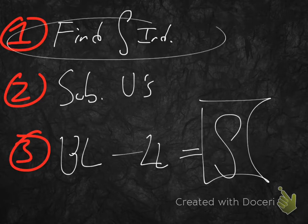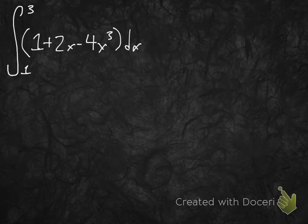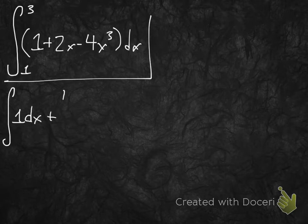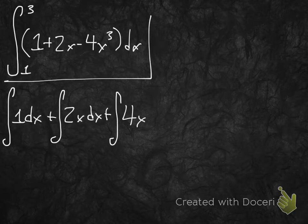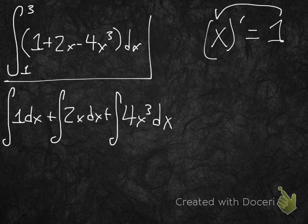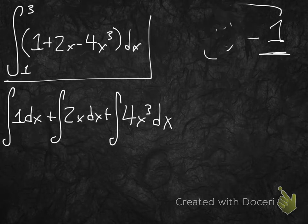Let's start with step 1 — finding the antiderivative. We can break this up into the indefinite integral of 1 dx, plus the indefinite integral of 2x dx, minus the indefinite integral of 4x cubed dx. The indefinite integral of 1 is just x, because the antiderivative of x is 1 — meaning if you took the derivative and got 1, it must have been x.